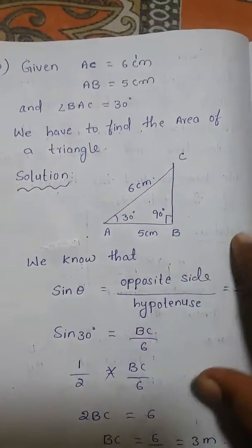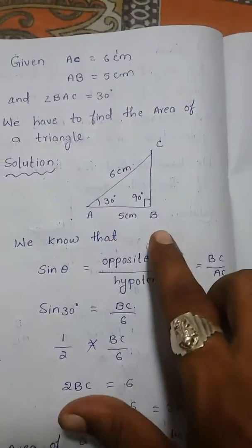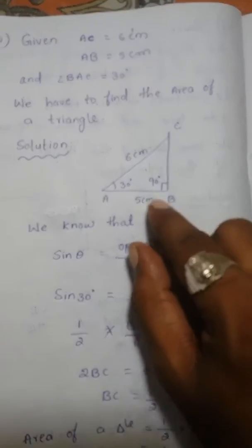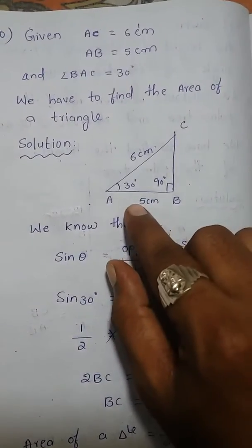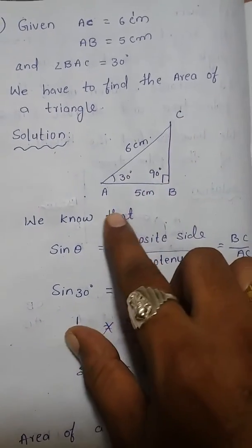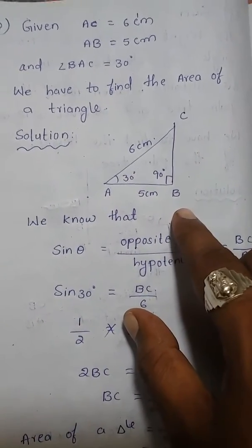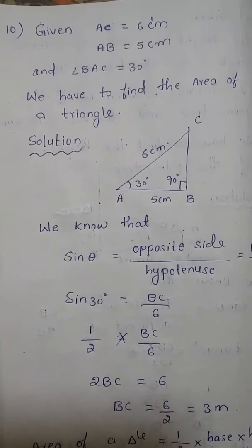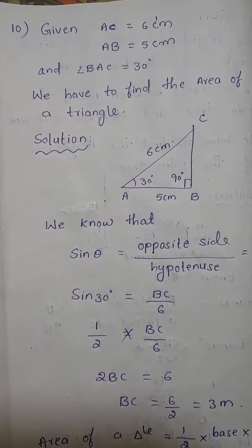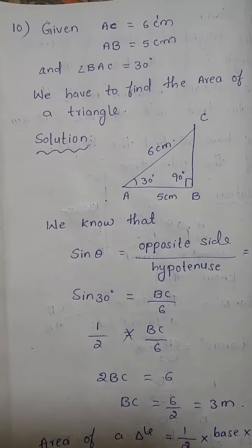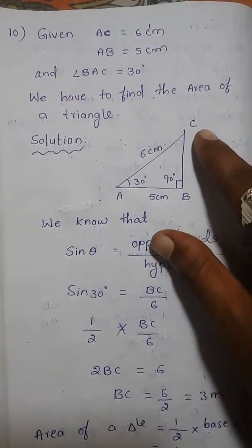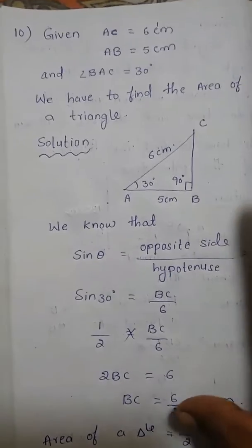Draw the rough sketch: ABC is a right angle triangle, right angle at B, angle A is 30 degrees, AC is 6 centimeters, and AB is 5 centimeters. To find the area of a triangle, area equals half base into height. Here the base is already given; we just have to find the height of the triangle.